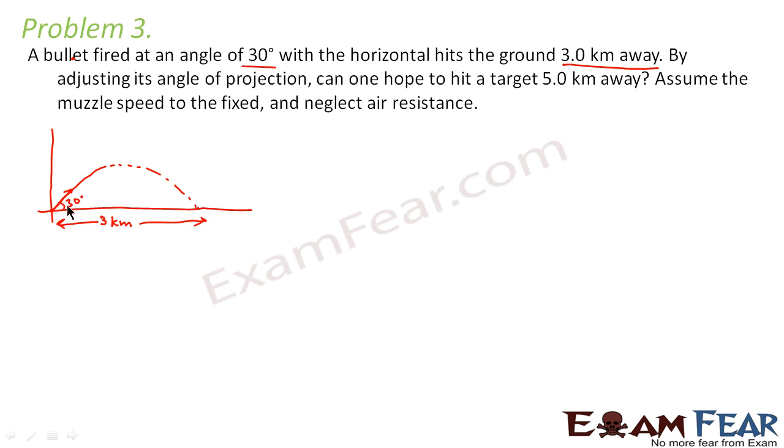Let us suppose if I tell you that you change this angle of projection, but in such a way that this bullet hits the ground only after 5 kilometers. That means, if you change its angle to some angle, say theta, then this bullet should hit the ground at a distance of 5 kilometers from the origin.